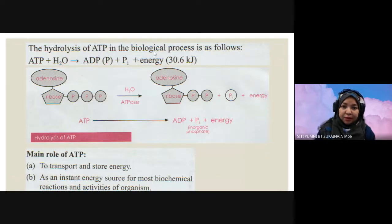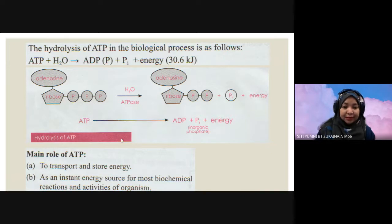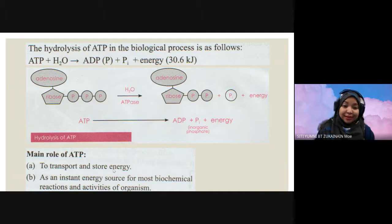The hydrolysis of ATP in the biological process is as follows: ATP plus water breaks down to release one phosphate group and it becomes ADP — adenosine ribose triphosphate becomes ADP. The role of ATP is to transport and store energy as an instant energy source for most biochemical reactions and activities of organisms.